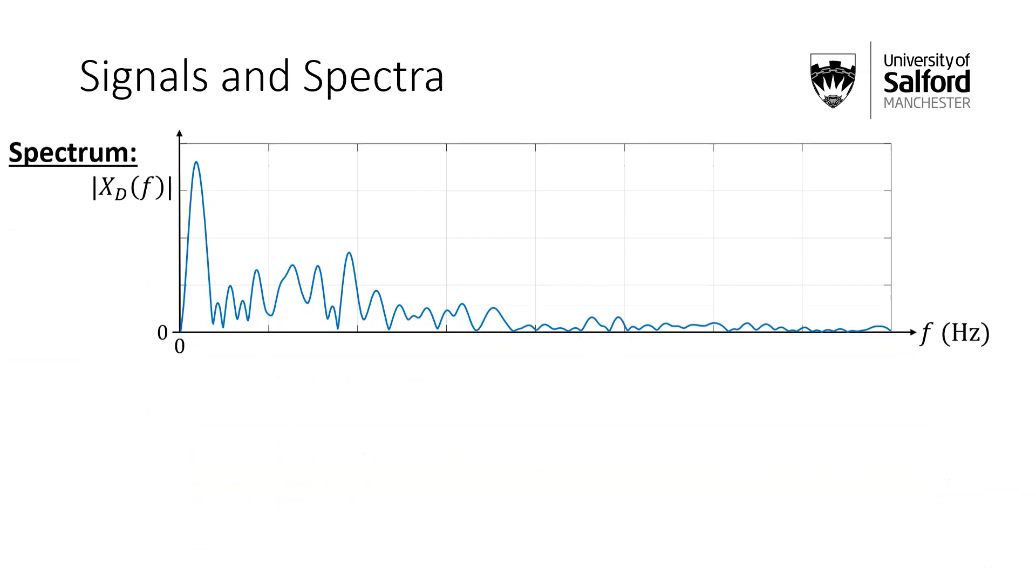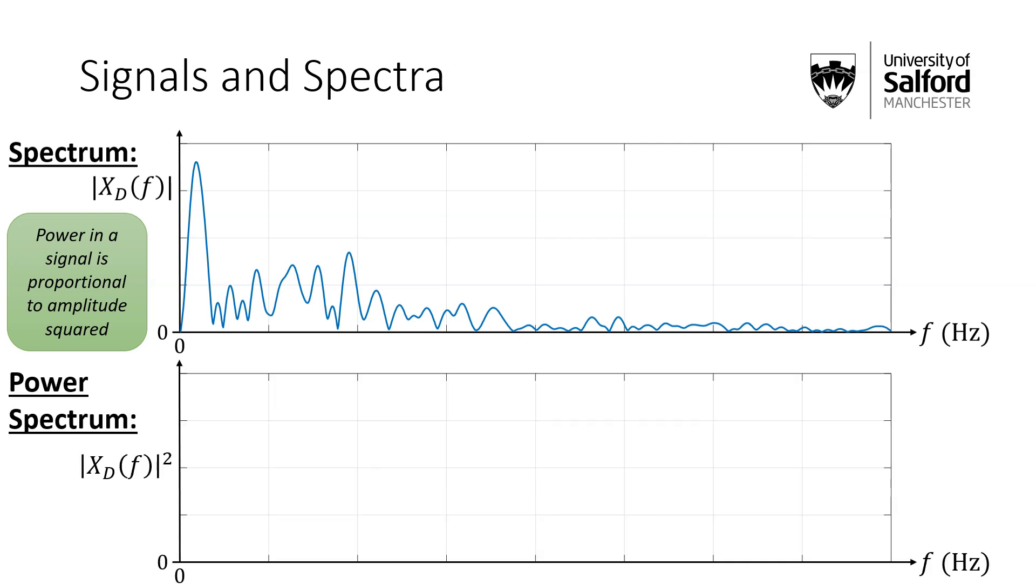Again, we can think about power. So just to draw these two things together, we might think about the power of this signal. And again, power is proportional to the amplitude squared. So the thing we might look at is something with the value of XD, the spectrum of magnitude squared. And this is called a power spectrum. And it will look a bit like this. So again, it sort of tends to focus on the peak values, tends to de-emphasize the smaller values, because we've squared it.